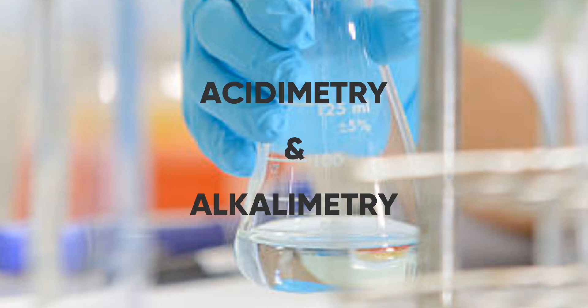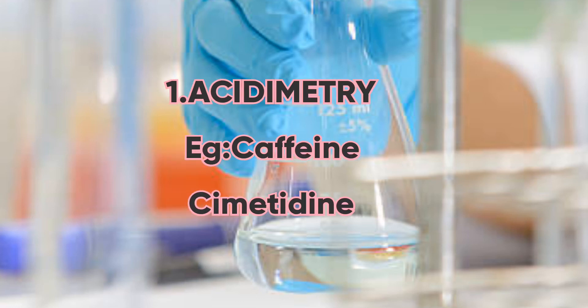The classification of non-aqueous titrations is mainly into two types based on the titrant used: acidimetry and alkalimetry. In acidimetry, for the determination of basic substances, a solution of perchloric acid in glacial acetic acid is the most commonly used titrant. Examples of drugs determined by acidimetry are caffeine, cimetidine, and ephedrine.